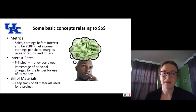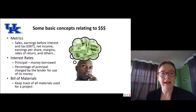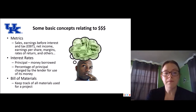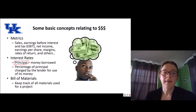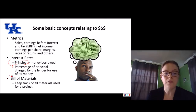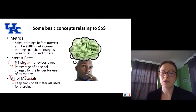Some basic concepts relating to money. When we talk about economics, we hear the term metrics. Metrics refers to sales, earnings before interest and tax, net income, earnings per share, margins, rates of return, and others. Interest rates depend on the principal — the money that you borrow — and the interest rate is the percentage of the principal charged by the lender for use of its money. We've already looked at a bill of materials for our project, and that's where we keep track of all materials used.